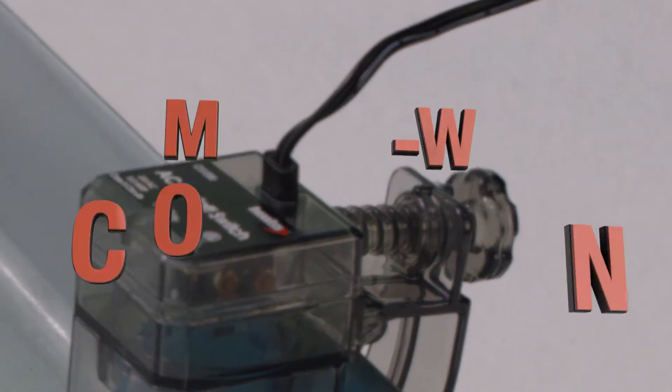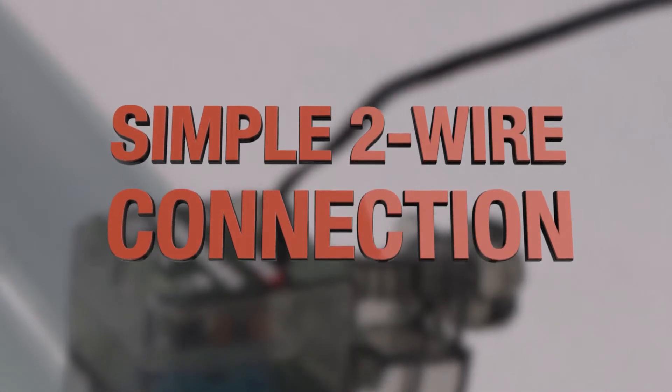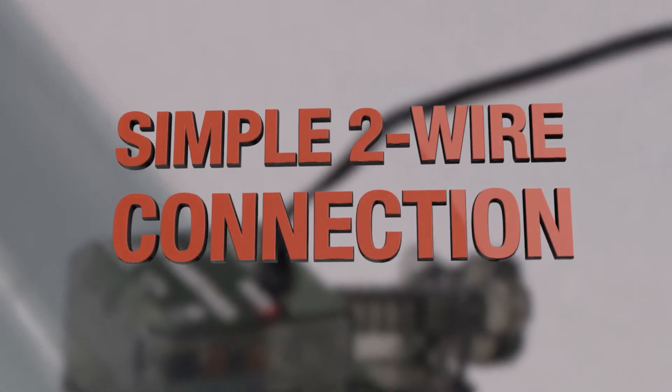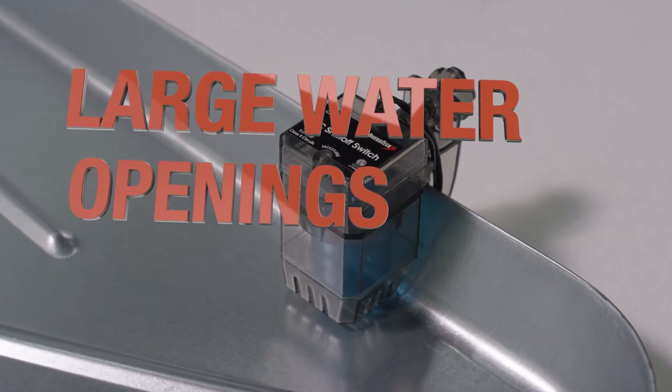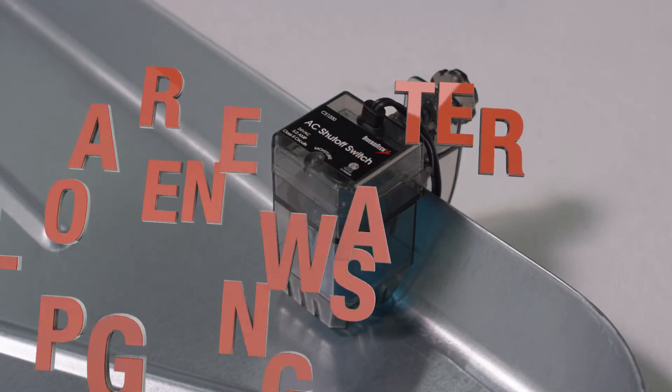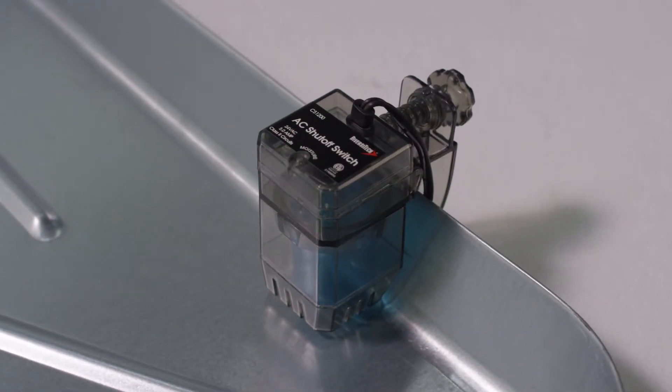The switch's simple two-wire connection ensures no polarity problems and quick and easy installation. The larger hole openings allow 10 times more water to enter the detection chamber so the switch triggers quickly to prevent damage.